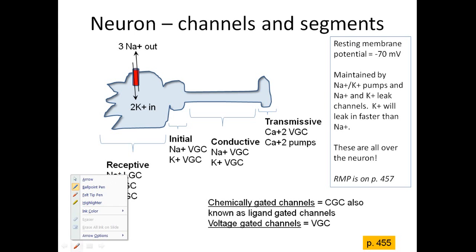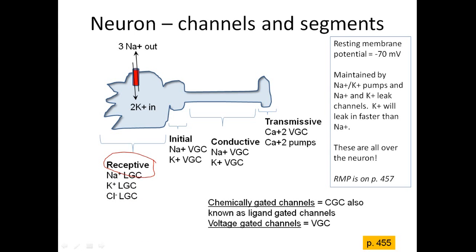The receptive segment is made up of the dendrites and the cell body — they're going to receive the message from the other neuron. On the receptive segment we have sodium, potassium, and chloride ligand-gated channels. Our book calls them chemically gated channels, or CGCs. They're the same thing — you need a chemical to bind to them to signal those channels to open.